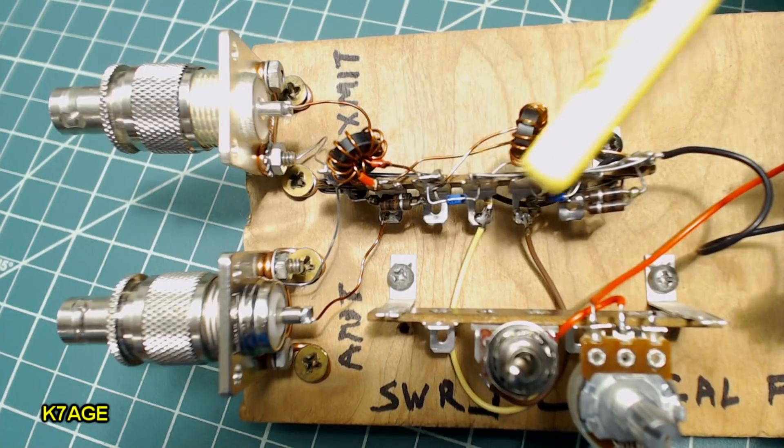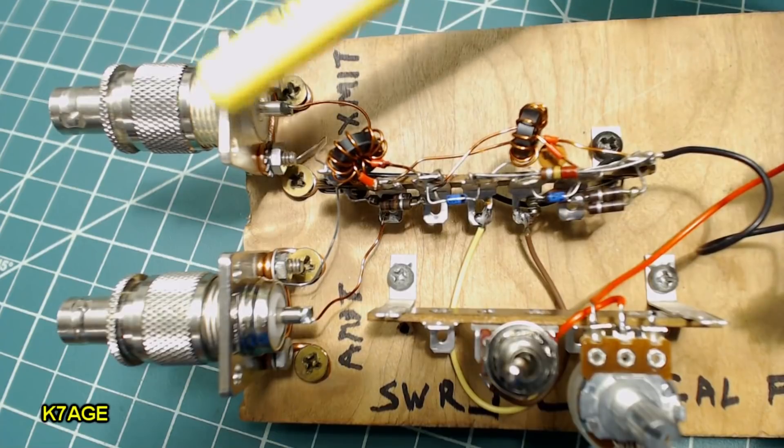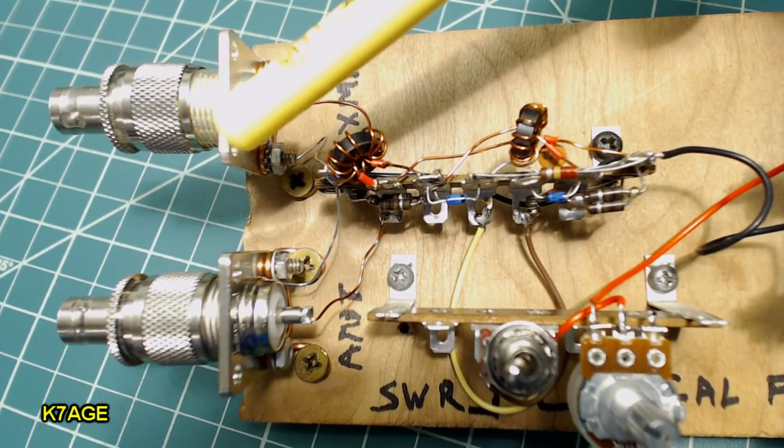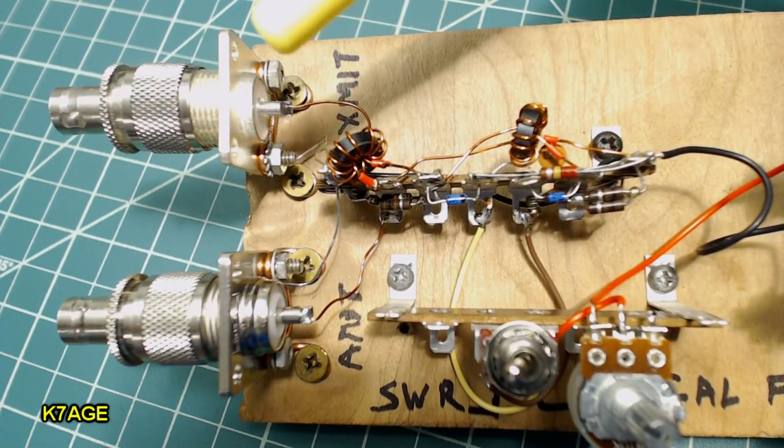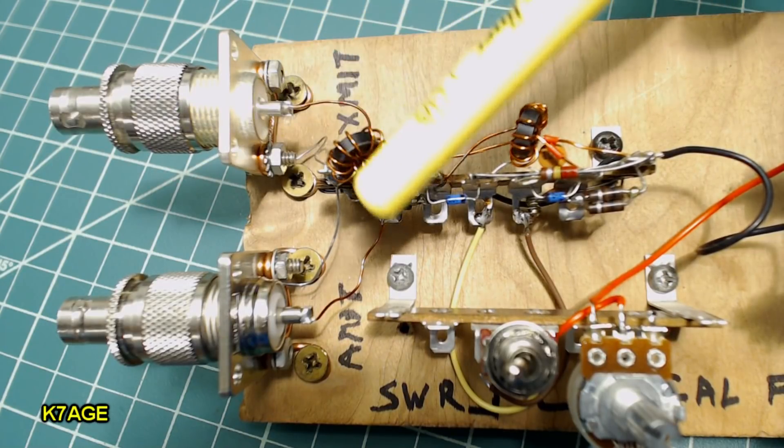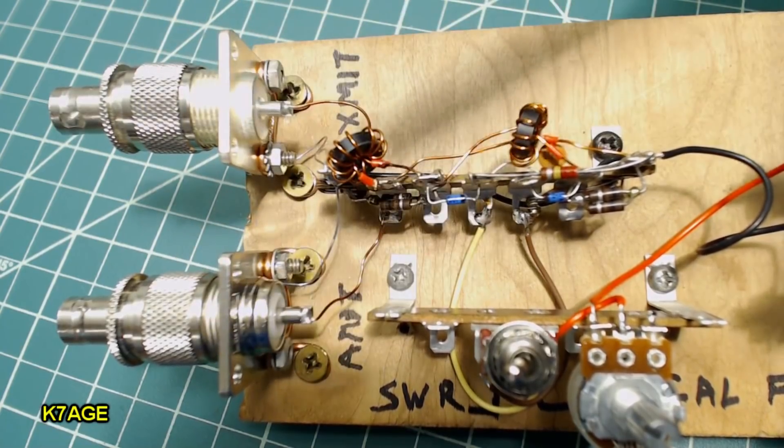So I have the terminal strip that I completed in the previous video mounted on the board here along with a couple SO239 connectors mounting with just some heavy wire and some wood screws. Not very fancy. And the RF passes through the toroid down to this log and out to this other connector. So that's the pass through for the RF.